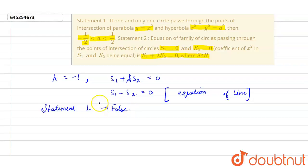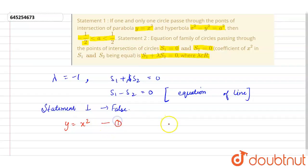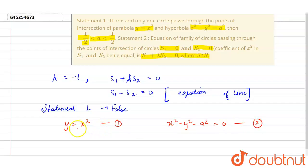Now for Statement 1, the parabola is given as y equals x squared — let us call this equation 1 — and the hyperbola is given as x squared minus y squared minus a squared equals 0 — let us call this equation 2. The equation of the family of curves of second degree passing through the point of intersection of this hyperbola and this parabola will be formed next.